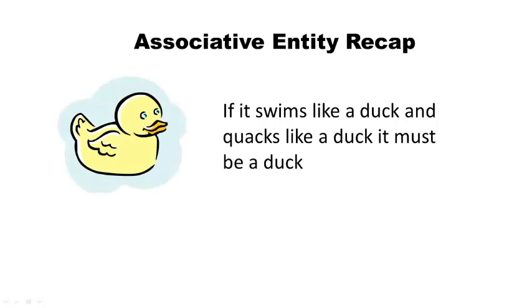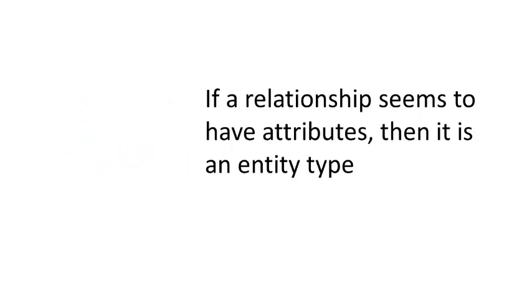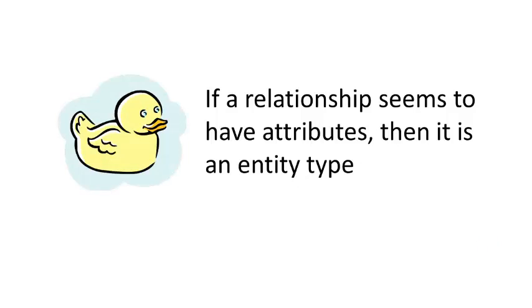As we said when we talked about associative entities, we gave an analogy of the duck test. If it swims like a duck and quacks like a duck, it must be a duck. And how does this apply to associative entities? If a relationship seems to have attributes, then it's not just a relationship — it is an entity type. This is where your relationship is quacking like a duck. It's acting like an entity type because it now has attributes, so we promote it and make it an entity type. That's what an associative entity is.